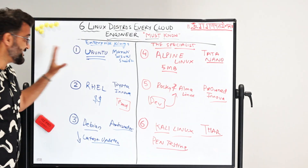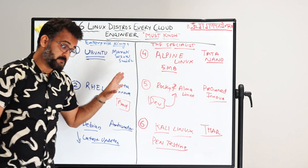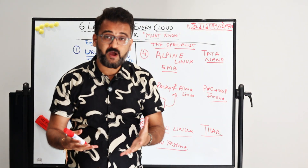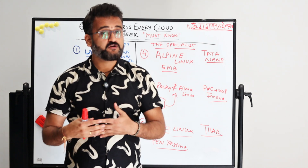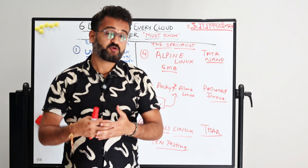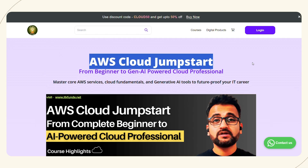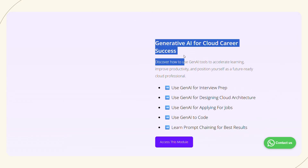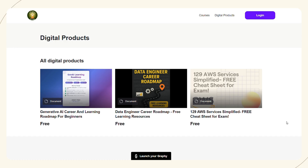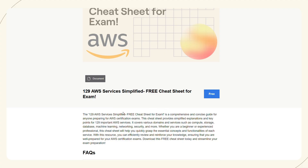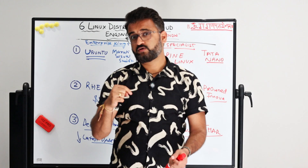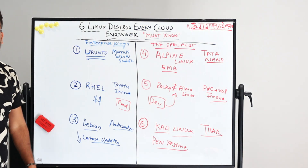These six distributions are very important, but the most important thing is where you're going to deploy them — all these Linux environments will go on a cloud environment more often than not. If you're new to cloud or want to start your journey on AWS cloud, there's something interesting in the description. We've also built a free guide covering all 128 AWS services in one or two lines each, which will be very handy for your interviews.